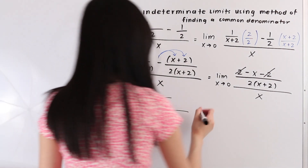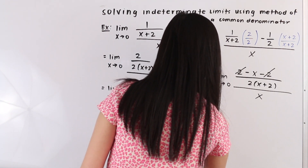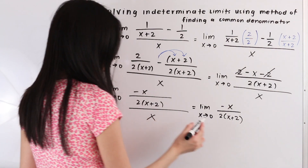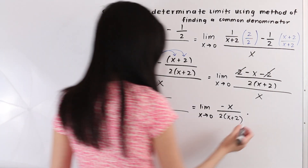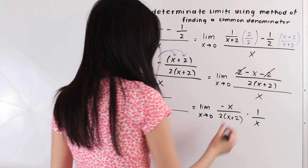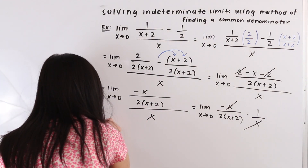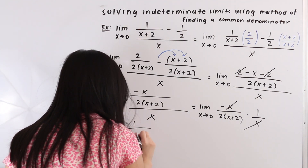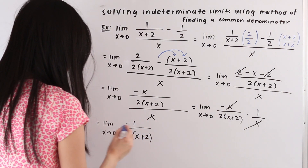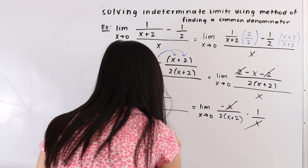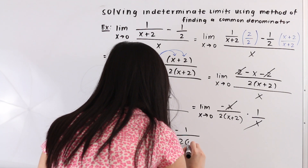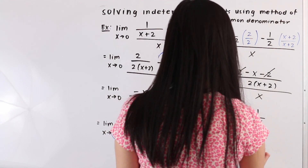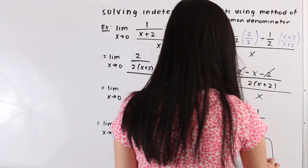Now let's simplify this. We can rewrite this as the limit as x approaches 0 of negative x over 2 times x plus 2, and we change the divided by into a multiplication and take the reciprocal of the denominator, so we have 1 over x. Now we can see that this x cancels out with the x, and we have the limit as x approaches 0 of negative 1 over 2 times x plus 2. From here, we plug in 0 for x, giving us negative 1 over 2 times 0 plus 2, which simplifies to negative 1 over 2 times 2, which is equal to negative 1 over 4. And that is our final answer.